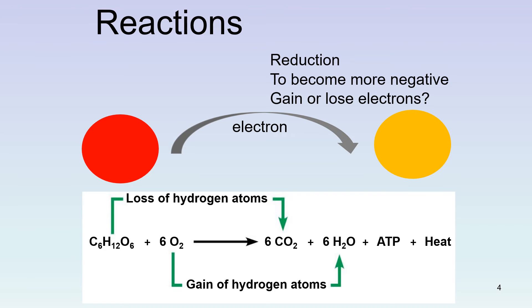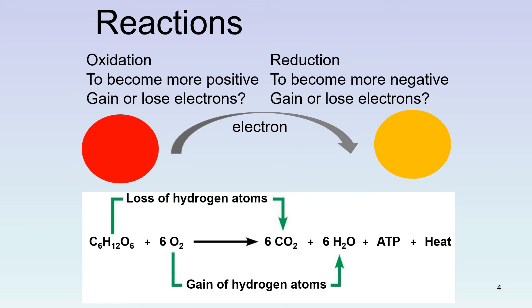If we have a molecule accepting an electron — being reduced — that electron has to come from somewhere. It would come from a donor who, by losing the electrons, becomes more positive, or oxidized. Glucose is our electron donor in cellular respiration. When glucose becomes oxidized, it turns — in many steps — into carbon dioxide. Molecular oxygen is our electron acceptor; when it becomes reduced, it turns into water.